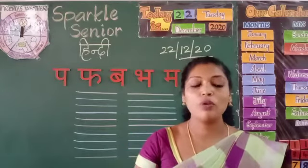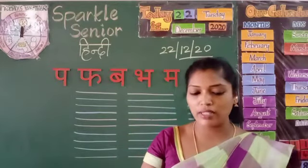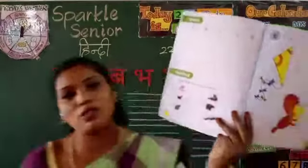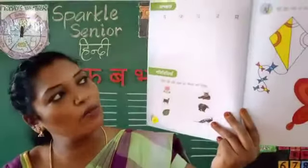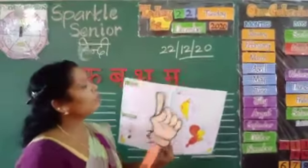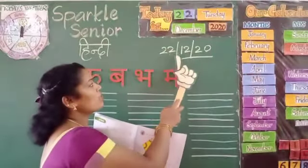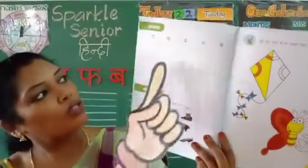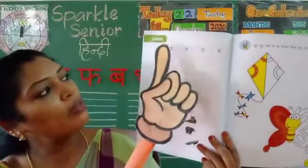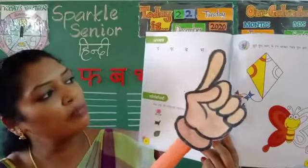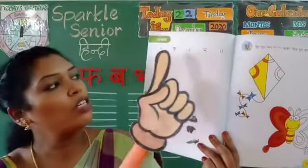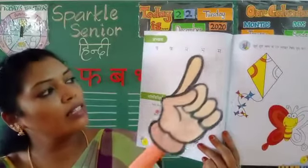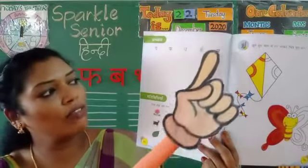Okay, so without wasting any time, quickly take out your Aadhanika book. Because since we are doing the review, we need to do some writing activity in the book. Before starting writing, for today's date: 22/12/20. So here, Pah, Bha, Bha, Ma is given — you have to look and write the letters in the given lines below.